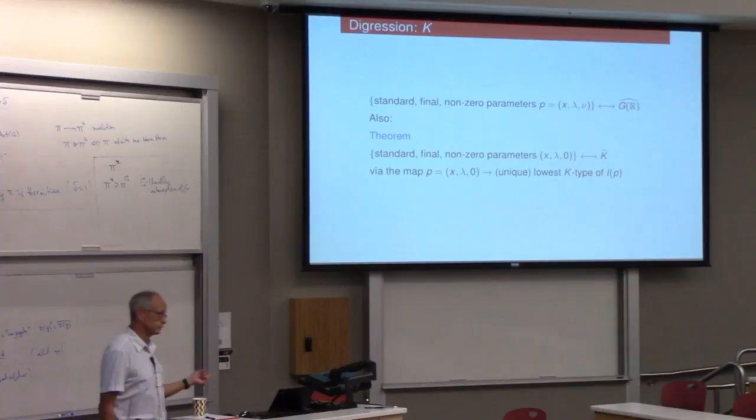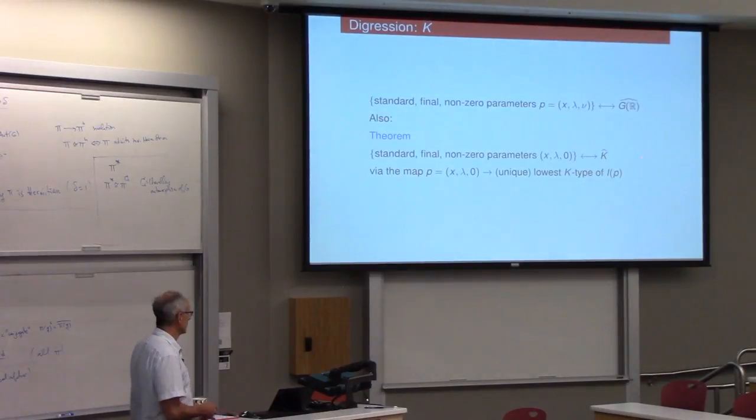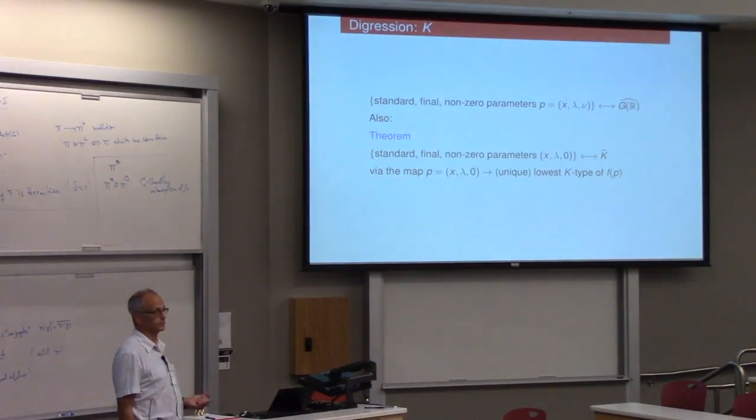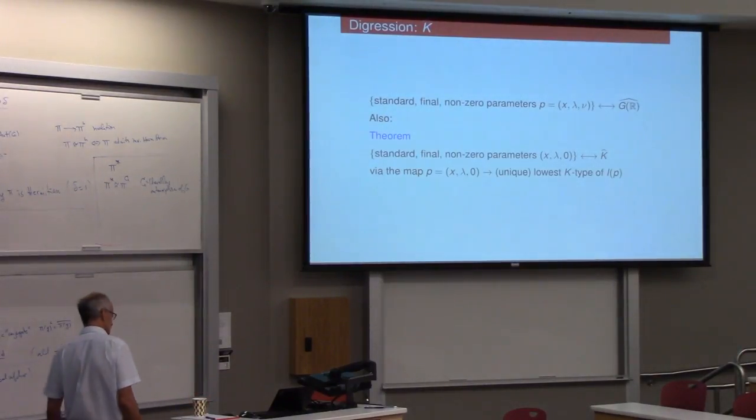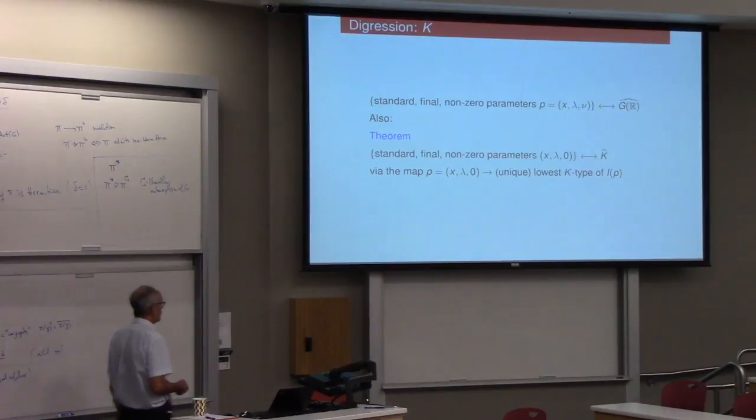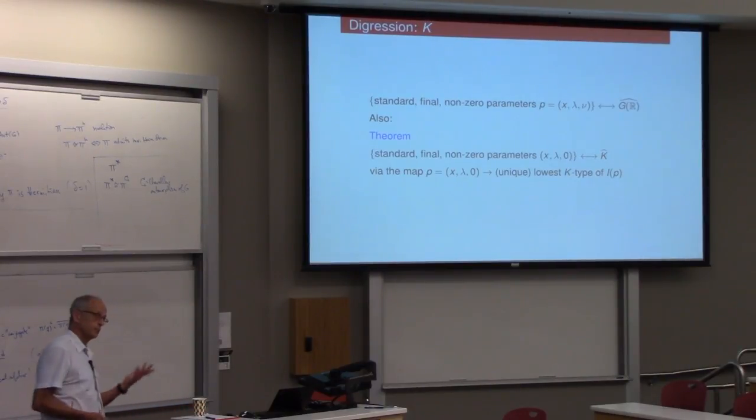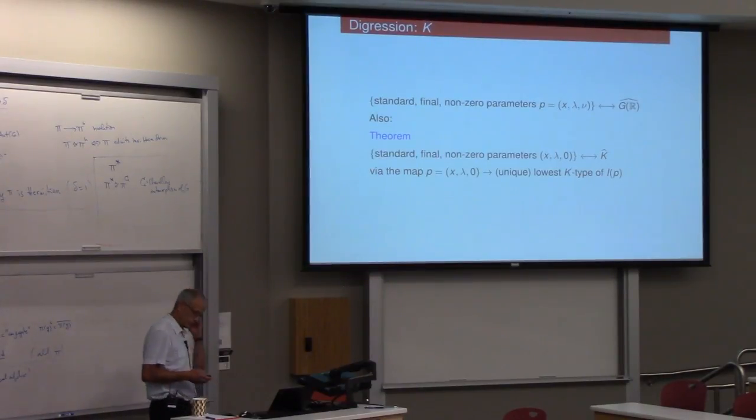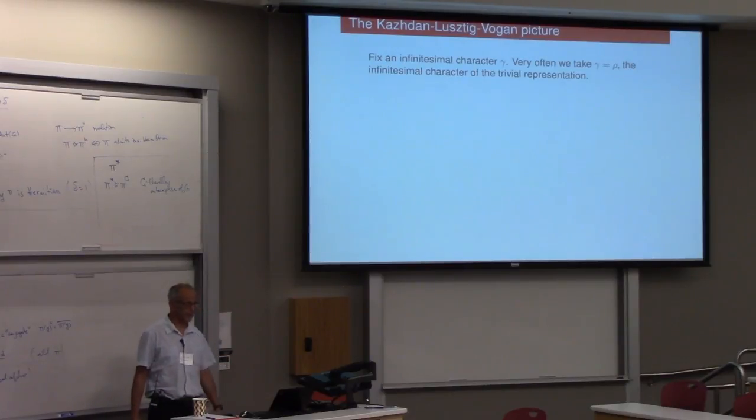I mean, I wouldn't say that taking the lowest K-type and checking one of the lowest K-type is a particularly good test either. Anyway. So, well, Monday when David talks more about omission forms, you'll see that the restriction of these representations to K is playing an important role. And this is an important fact. But that's all I'm going to say about K. Okay.